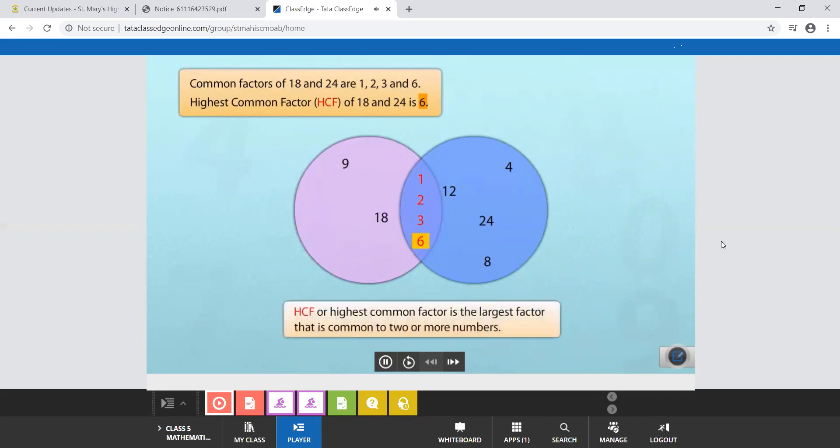HCF or highest common factor is the largest factor that is common to two or more numbers.